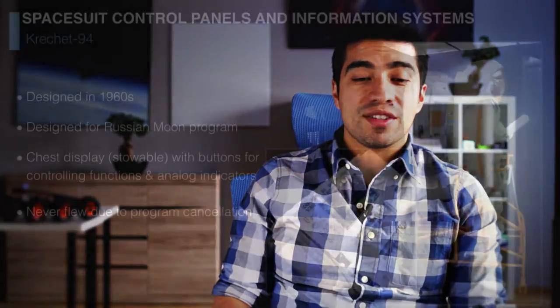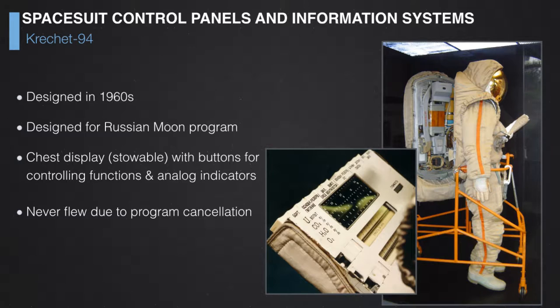The Krechet-94 was designed for the Soviet Moon mission, which of course never flew. But it had a very interesting design: a chest display that deployed from the spacesuit, from which the astronaut could read and input information. It had buttons and analog indicators showing battery status, CO2 content, oxygen level, and allowed actuation of certain spacesuit parts. It was never used in other spacesuits — it is the concept of the deployable panel.